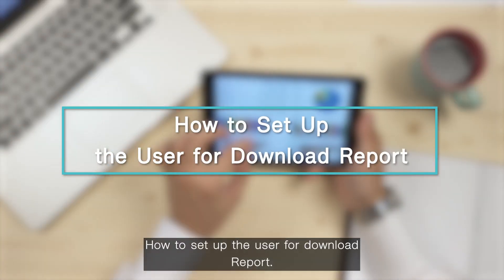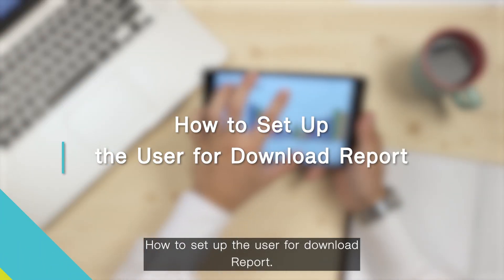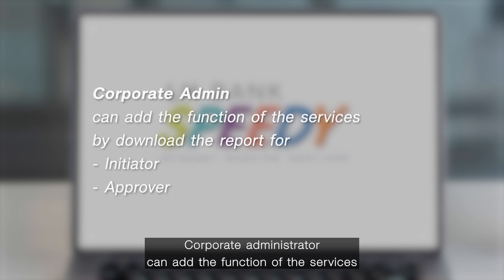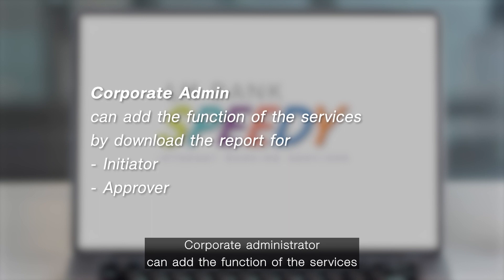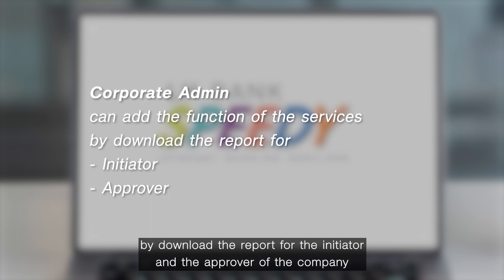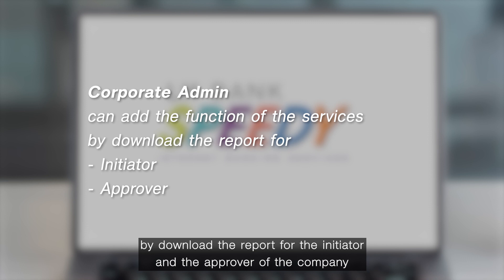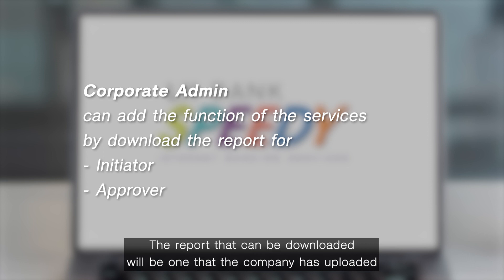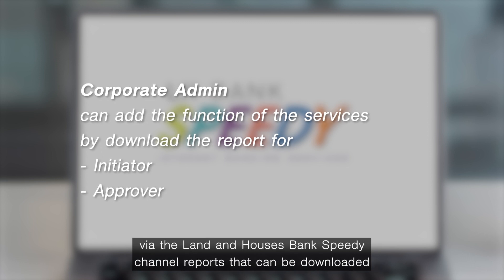How to set up the user for download report. The corporate administrator can add the function of downloading reports for the initiator and the approver of the company. The report that can be downloaded will be one that the company has uploaded via the Land and House Bank Speedy channel.